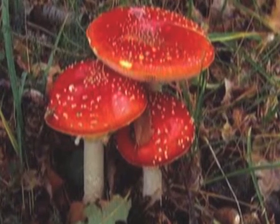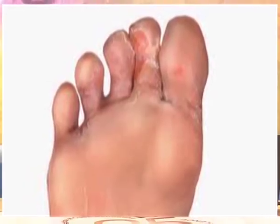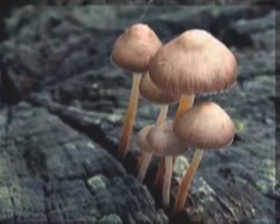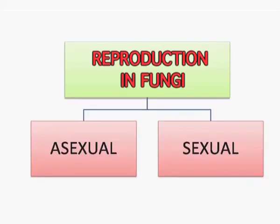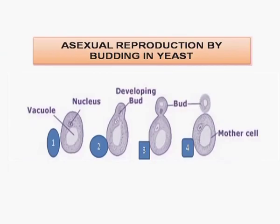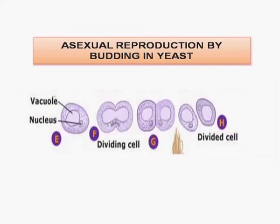Some fungi are also parasitic and can cause diseases. Yeast is a very good example of saprophytic fungi which can absorb glucose. Reproduction in fungi is both asexual and sexual. Asexual reproduction is by budding, fission, and spore formation. In budding, a bud appears, grows in size, a constriction appears, and it detaches itself from the mother cell to lead an independent existence.